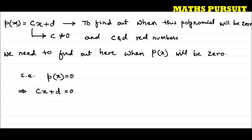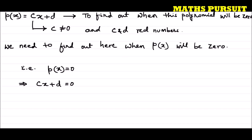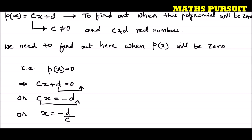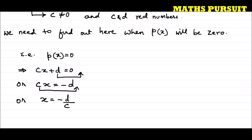Now we got cx + d = 0. Let us solve this equation to get our answer. We can write cx = −d, by moving the +d from the left hand side to the right hand side. Then x = −d/c, by moving c from the left hand side to the right hand side so it divides. This is our answer: x = −d/c. When x equals −d/c, we will get the zero of the given polynomial.